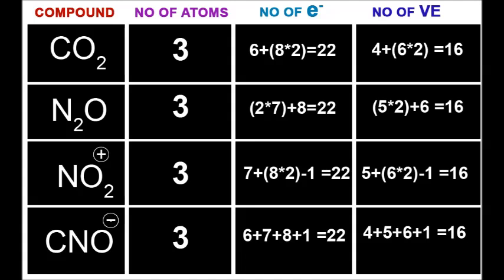Similarly, we can calculate the following compounds. Let us consider N2O: two nitrogens and one oxygen, so total atoms is 3. Then NO2 plus, again the total number of atoms is 3. CNO minus, the total number of atoms is 3.